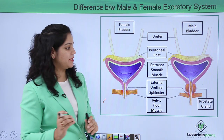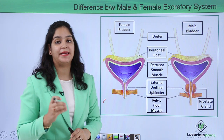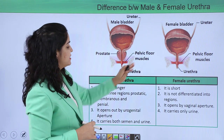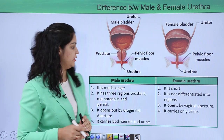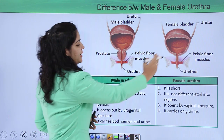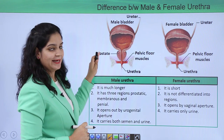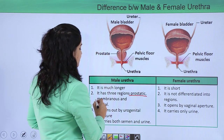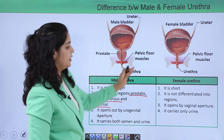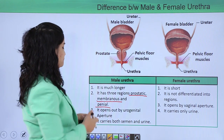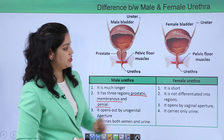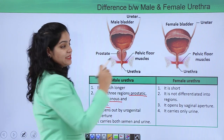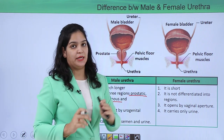The extra organ present in males is the prostate gland, which is important for nourishing the sperms. The male urethra is much longer, while the female urethra is shorter. The male urethra has a prostate gland and three regions — prostatic, membranous, and penile — and opens by the urogenital aperture. The female urethra has no prostate gland and opens by the vaginal aperture. The male urethra carries both semen and urine, while the female carries only urine.